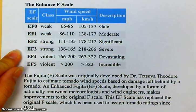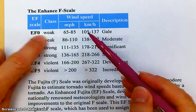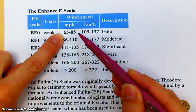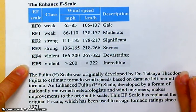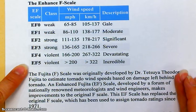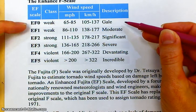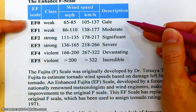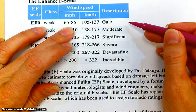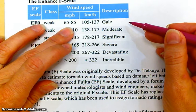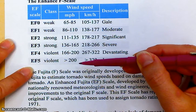Let's take one more look at the Enhanced Fujita scale. An EF0 is 65 to 85 miles per hour, with ratings going up through EF1, EF2, EF3, EF4, and EF5. You don't have to be in an EF5 tornado to get significant damage — even EF0 winds are hurricane-force and powerful enough to cause all sorts of damage, and it just gets worse as you move up the scale.